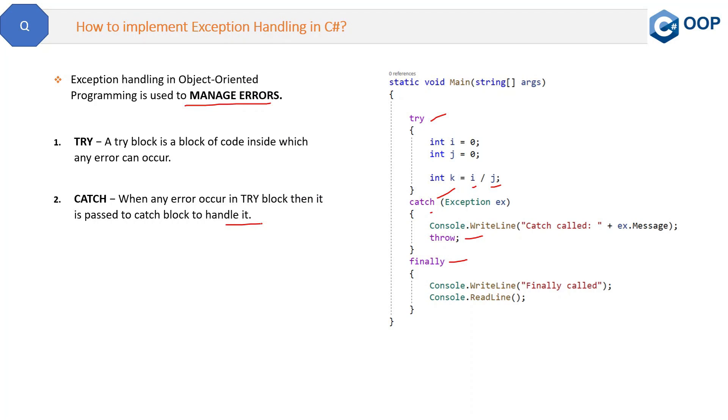Now in a program there can be some code which you want, or a developer wants to execute, whether any error will occur or not. So for that we have this finally block. The finally block is used to execute a given set of statements whether an exception is thrown or not thrown. So this console.WriteLine finally called will be definitely executed whether some error will occur in this try block or not.